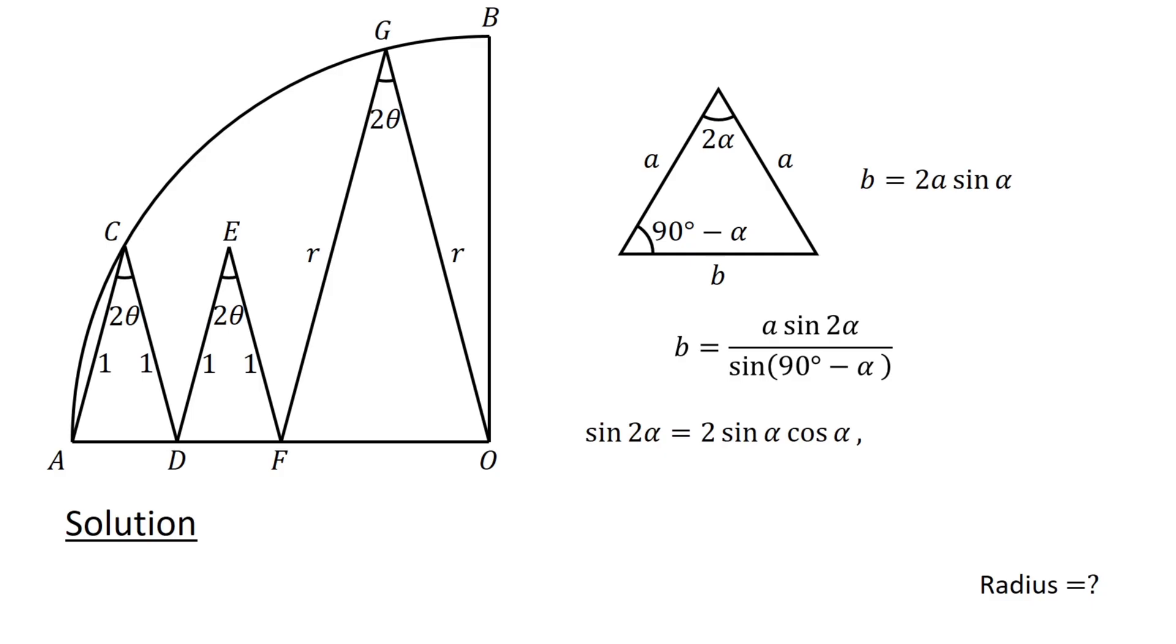Since sin 2 alpha equals 2 sin alpha cos alpha, and sin of 90 degrees minus alpha equals cos alpha, our expression for B becomes 2 A sin alpha cos alpha over cos alpha. Observe that cos alpha cancels out, and we have B equals 2 A sin alpha.